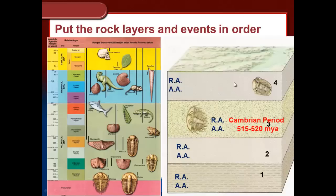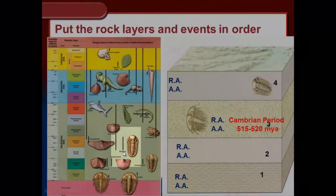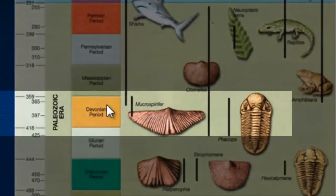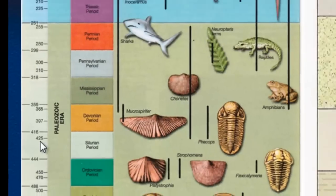Rock layer four has to be younger than layer three. Looking at this fossil — another trilobite; the closest living relatives to trilobites today are horseshoe crabs — this is called Phacops. It has a larger range than Olenellus. Some index fossils can span multiple time periods: Phacops ranges from the late Silurian up through the late Devonian.